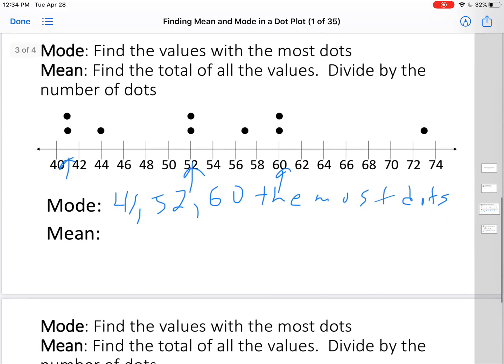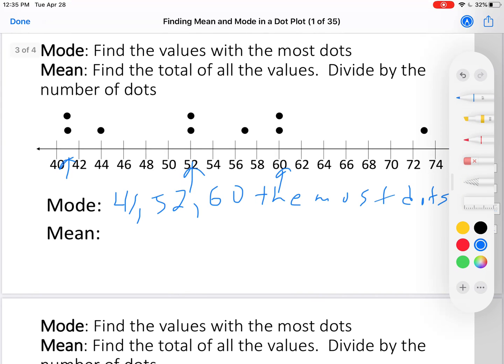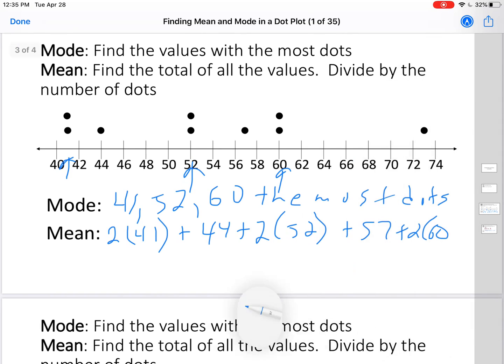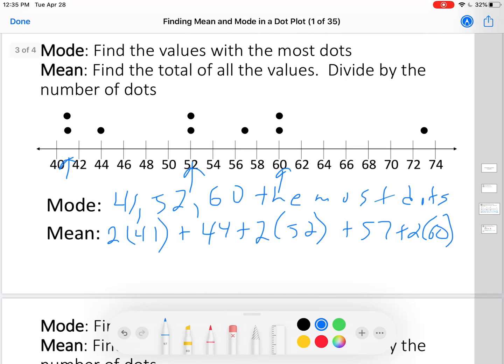Let's go back now. Let's find the mean. We need to first find the total of all the values and then divide by the number of dots. Okay, let's find the total of all the values. There are two 41's plus a 44 plus two 52's plus a 57 plus two 60's plus a 73. I'm going to use my calculator and find that answer.